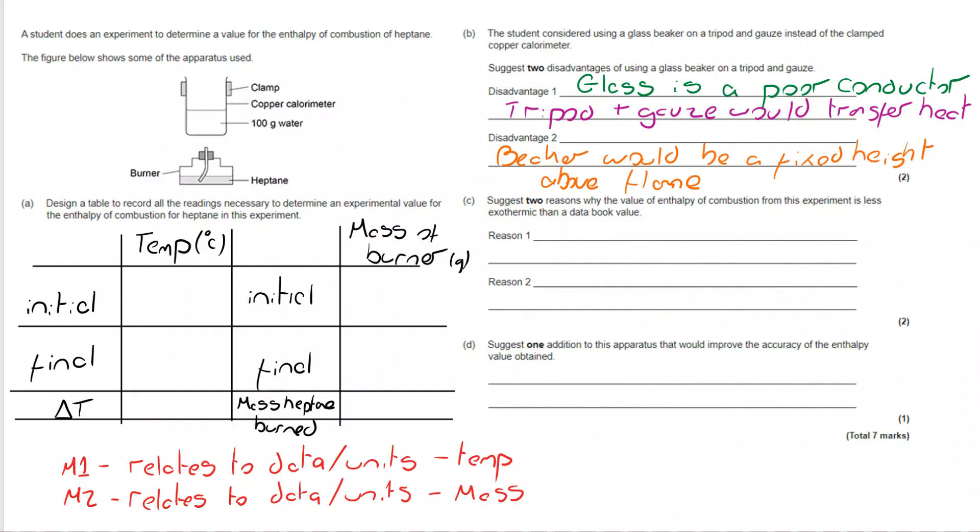Moving on to part C: suggest two reasons why the value of enthalpy of combustion from this experiment is less exothermic than a data book value. Well, less exothermic means less energy released than we had expected. It makes sense that this might be because some of the heat has been lost to the surroundings - it's not been used to heat up the water to its maximum temperature value.